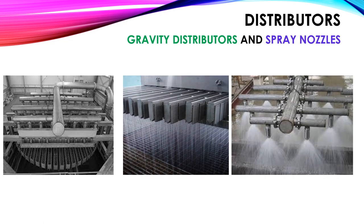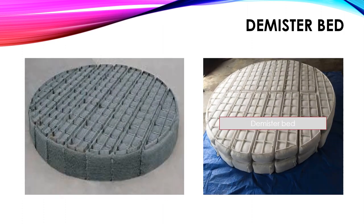This figure shows different types of distributors inside the column. The first two figures are gravity distributors and the third is spray nozzle type distributors. These are some demister beds used in distillation columns, normally in vacuum column top areas to avoid entrainment loss.